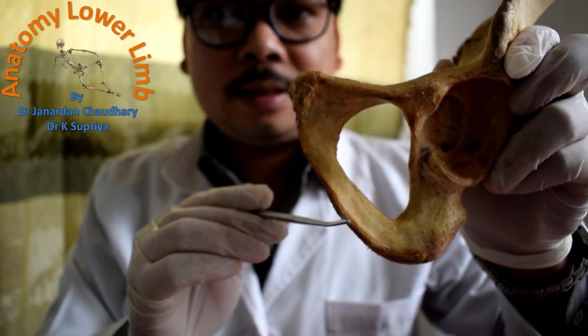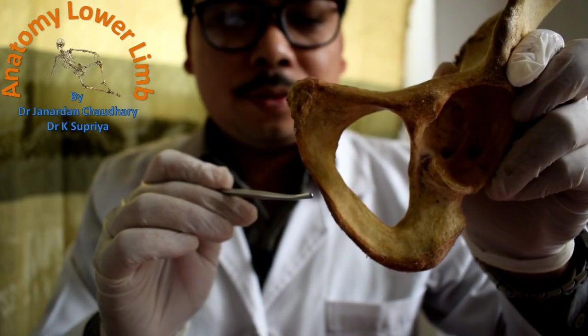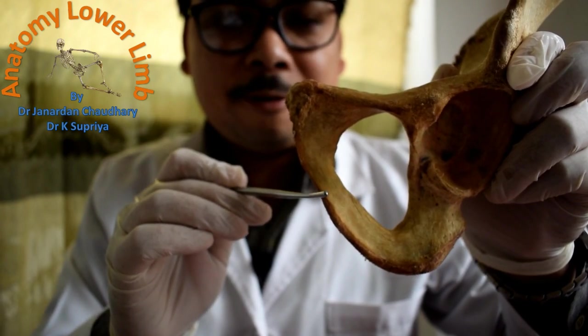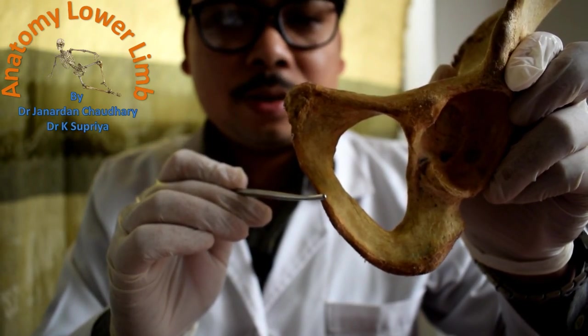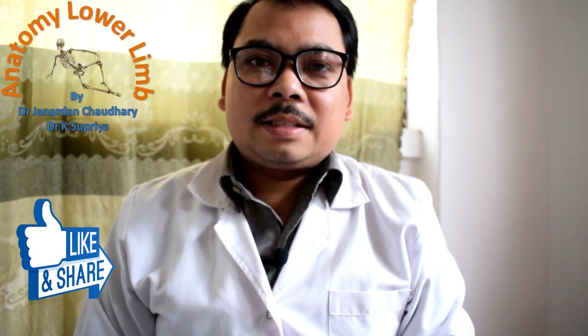The ramus of the ischium is attached to the front and lower aspect of the body of the ischium. It runs forward and medially with an upward direction, joining with the inferior ramus of the pubis bone.